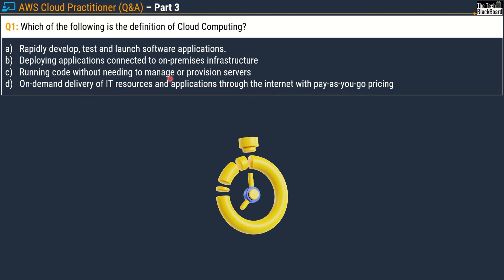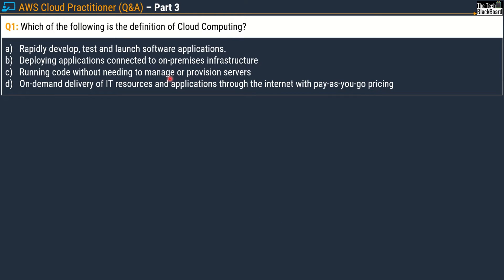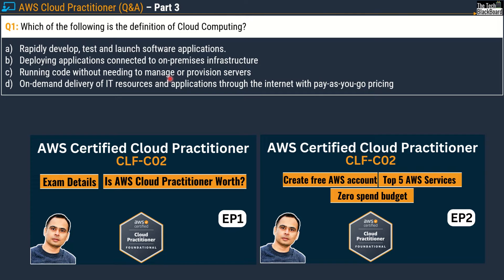Always keep a timer with you because not only accuracy but speed also counts during these examinations. Please note that the Cloud Practitioner exam is 90 minutes and you need to complete 65 questions. Out of these 65 questions, 50 would be scored and 15 others would be unscored. More information on exam details, question format, how scoring is done, and how to create a free AWS account is given in episodes one and two of this series.